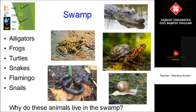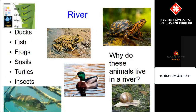Look at this example of an environment: the swamp. The swamp is hot and wet. In the swamp you can find animals such as alligators, frogs, turtles, snakes, flamingos and snails. These animals live in this environment because it is hot and wet.